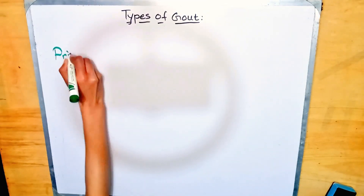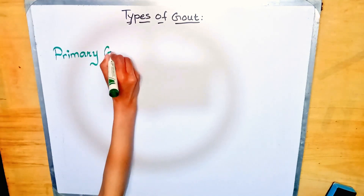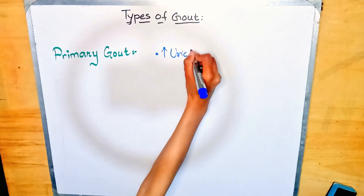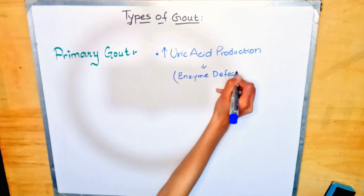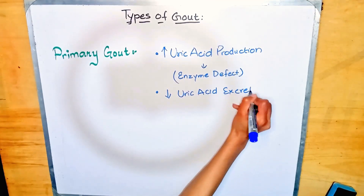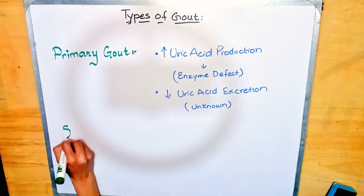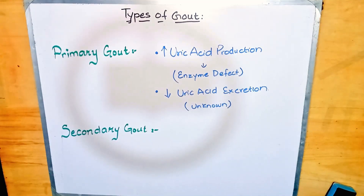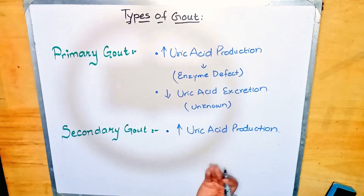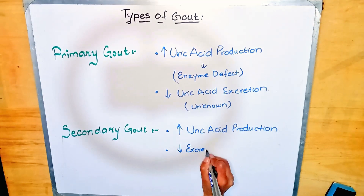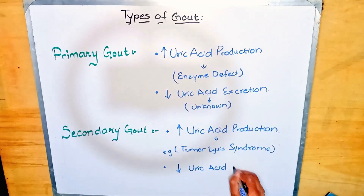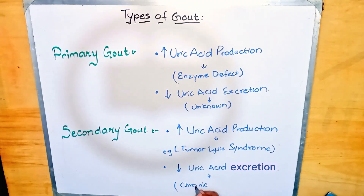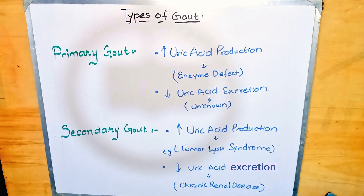There are two types of gout: primary gout and secondary gout. Primary gout is due to increased uric acid production mainly caused by an enzyme defect, or due to decreased uric acid excretion, mostly for unknown reasons. Secondary gout is due to some underlying condition — increased uric acid production as seen in tumor lysis syndrome, or decreased uric acid excretion as seen in chronic renal disease.